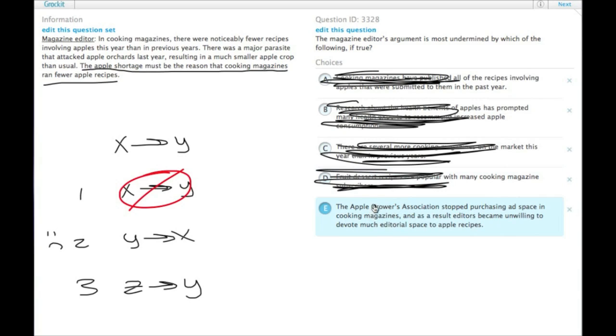E, the Apple Growers Association stopped purchasing ad space in cooking magazines, and as a result, editors became unwilling to devote much editorial space to apple recipes. So here's a reason why you would see fewer recipes in there. They've actually chosen not to print them for a different reason. So, choice E.